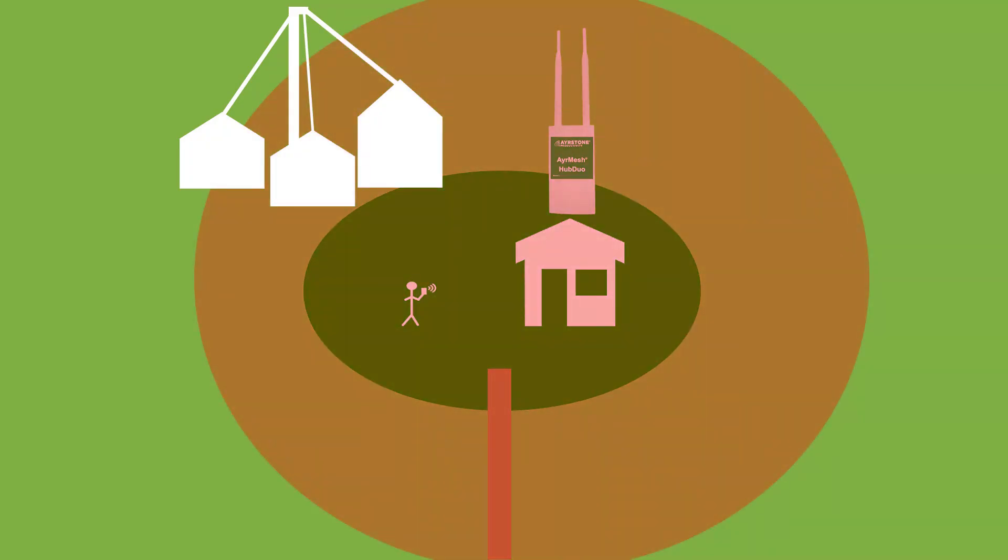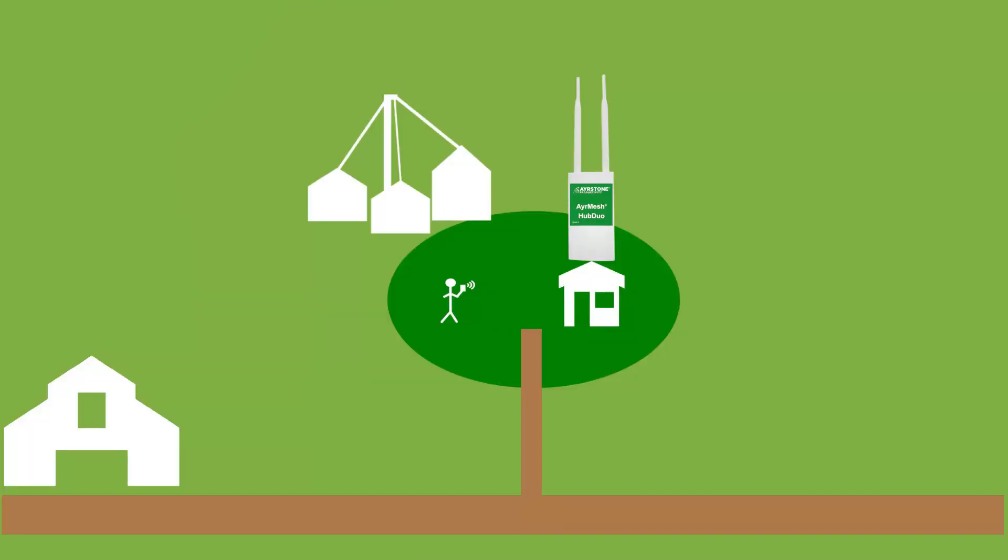But let's zoom out a bit. What about outbuildings on the property? You can use an AirMesh receiver to bring the network into a building, and you can connect an AirMesh indoor hub to provide indoor Wi-Fi.